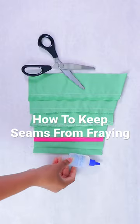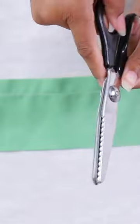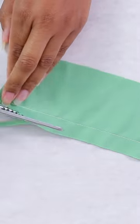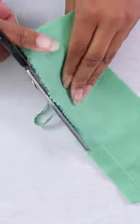Five ways to finish a seam without a serger. Number two, pinking shears. Pinking shears are a special type of scissor with a sawtooth edge. Just make sure you have enough seam allowance to cut a little bit off, and I'm just going to use the pinking shears to cut away right at the edge of the fabric.